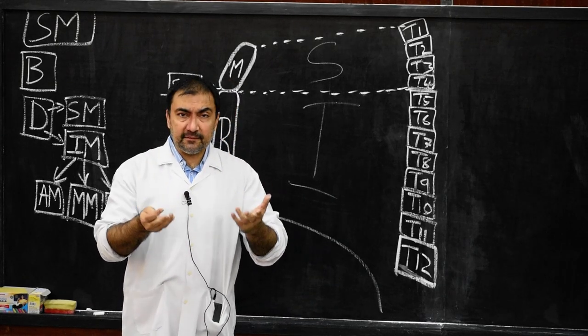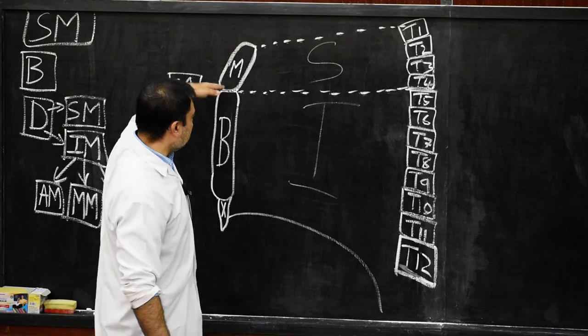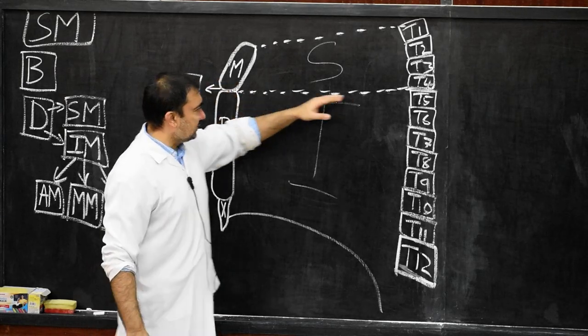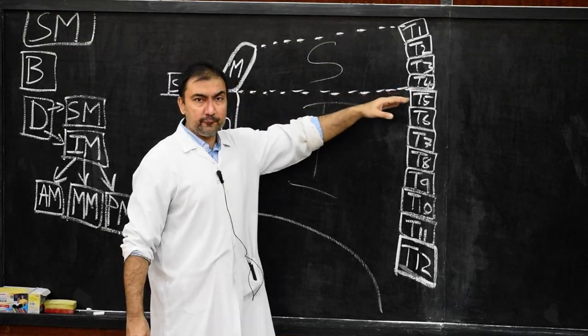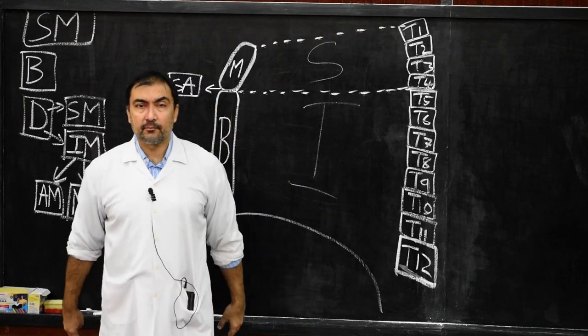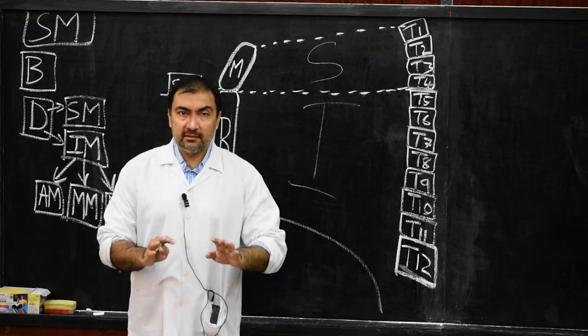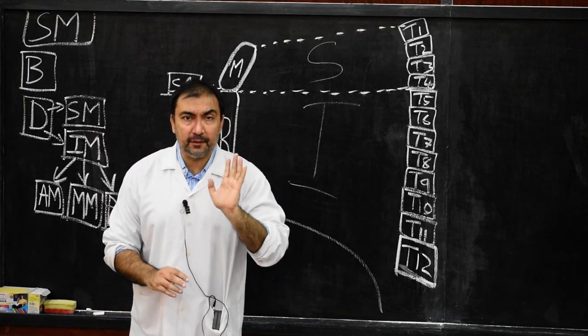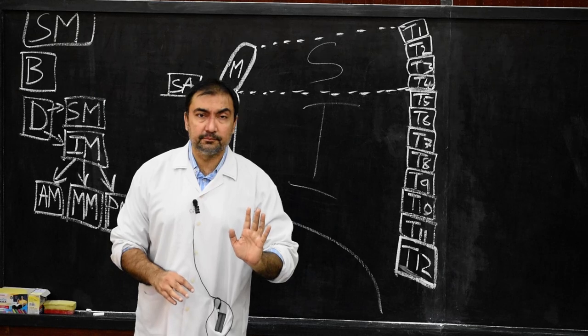How is it divided? A simple imaginary line passing from the sternal angle to the lower border of T4 divides it into superior mediastinum and inferior mediastinum — one superior mediastinum, one inferior mediastinum.